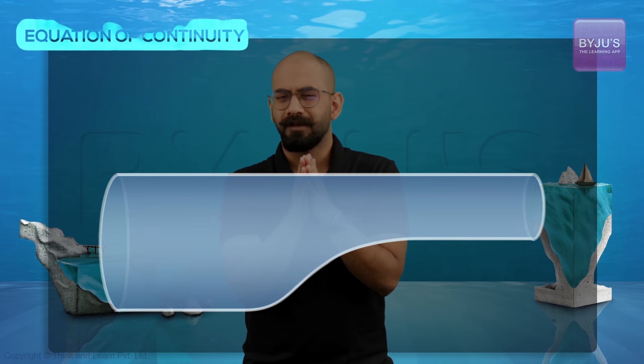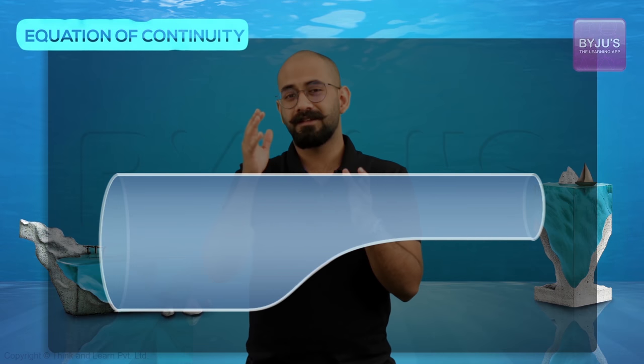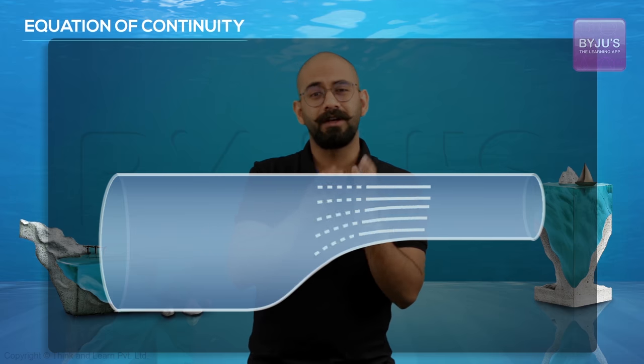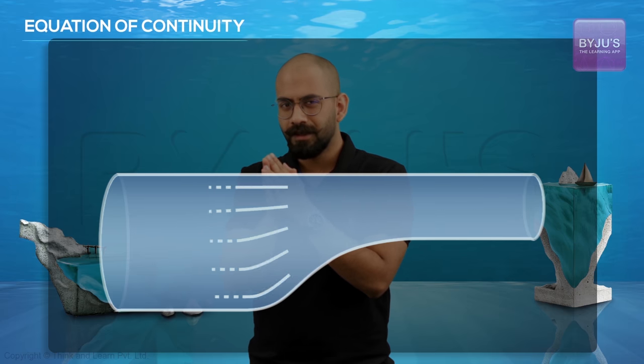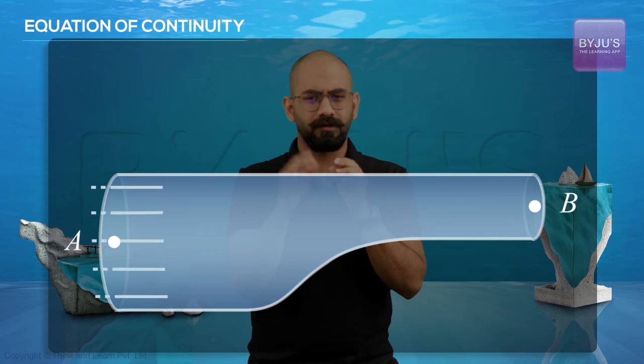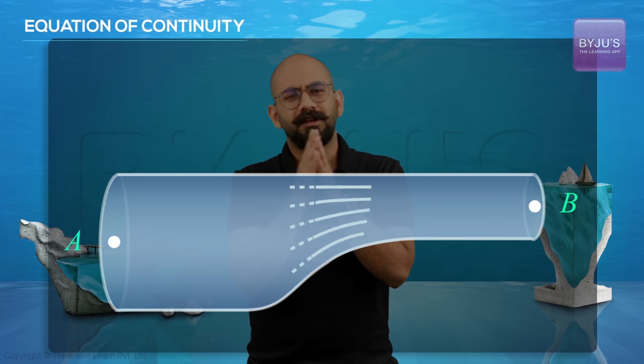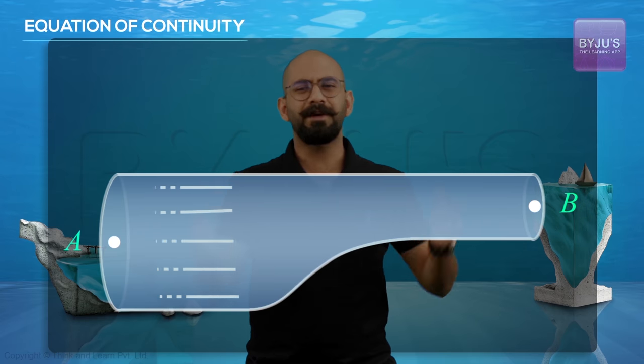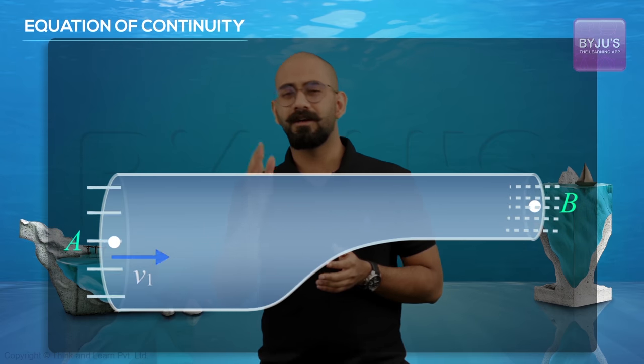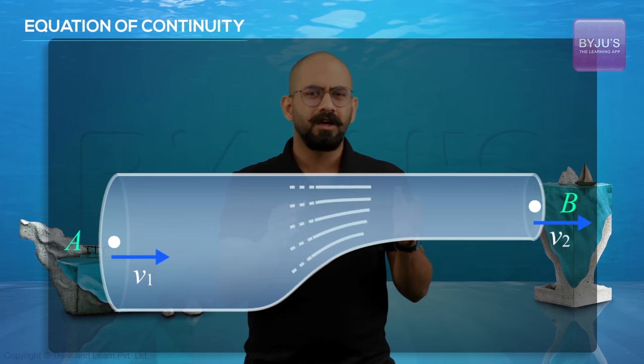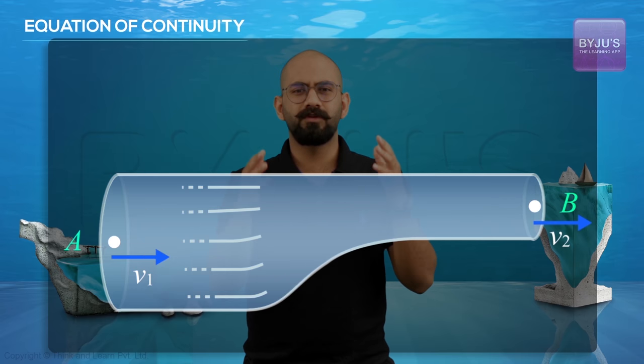Let's bring back the pipe and assume it has an incompressible fluid undergoing steady flow. If I took two points, let's say over here and here, what would be the relationship for their speed? If the speed here is V1 and the speed here is V2, what would V1 and V2 depend upon?